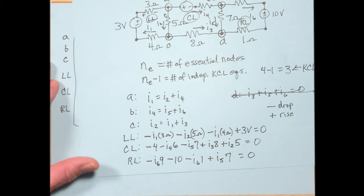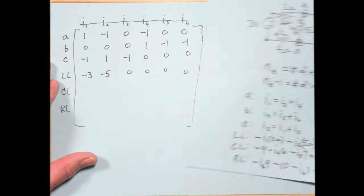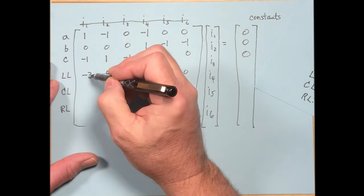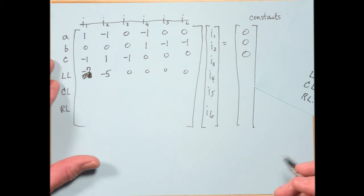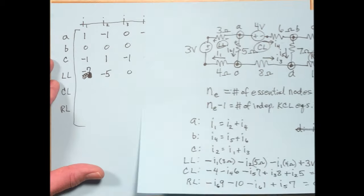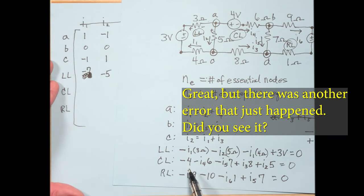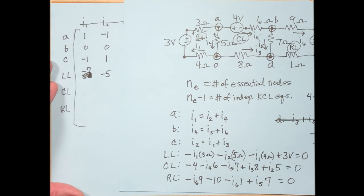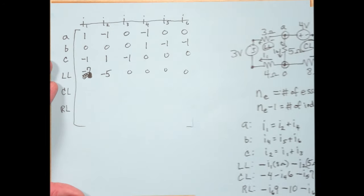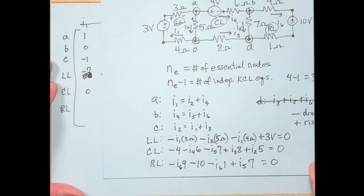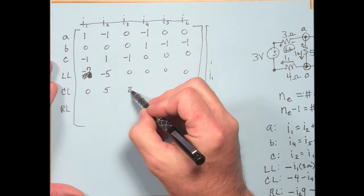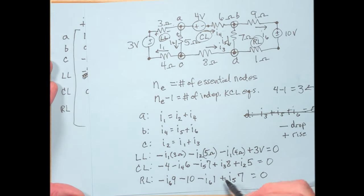The key is to figure out the currents first. Once you have the currents, you can solve pretty much anything beyond that. KVL and KCL can also be used for simpler circuits. Let's say we have a circuit where we want to find I0 and V0.